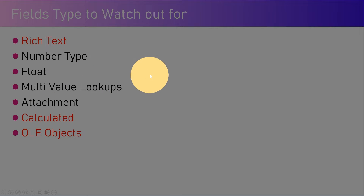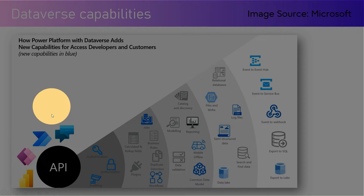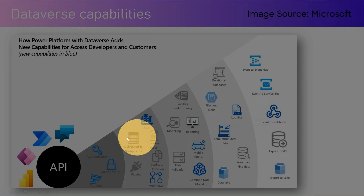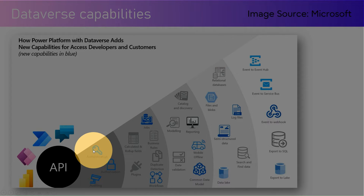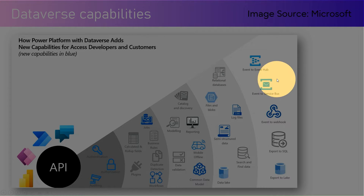The Dataverse capabilities you gain when migrating: anything in gray is already available in Access DB, but anything in blue is additional functionality you get in Dataverse — authentication, authorization, auditing, running jobs and workflows, common data model, semi-structured data, blob files, connecting to Azure services like Event Hub and Service Bus, webhooks, and export to data lake.